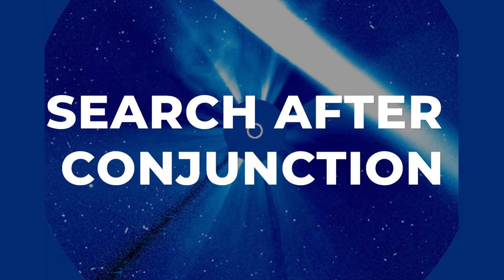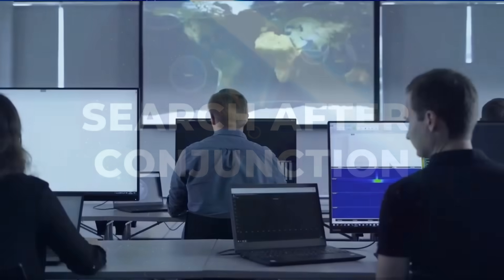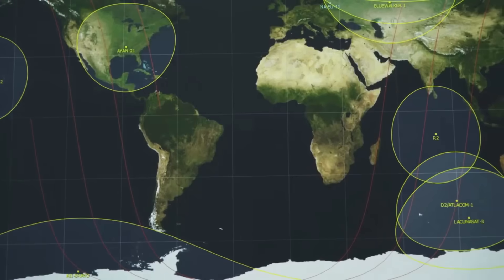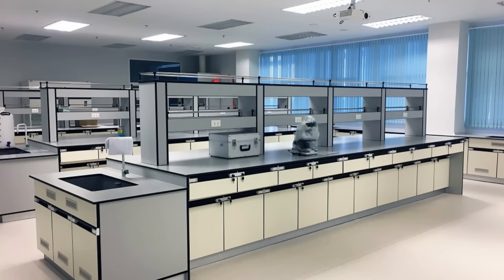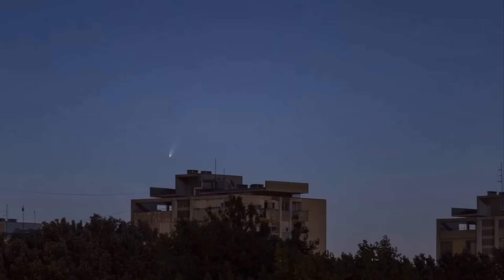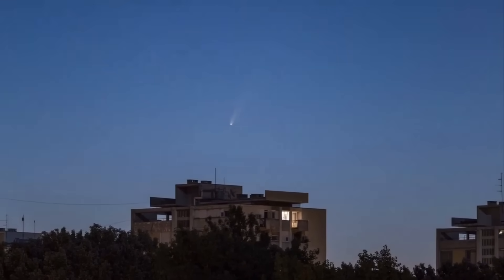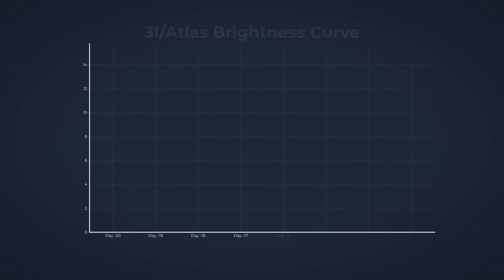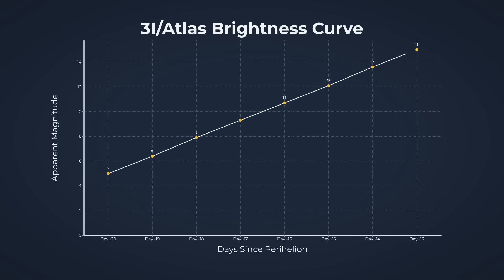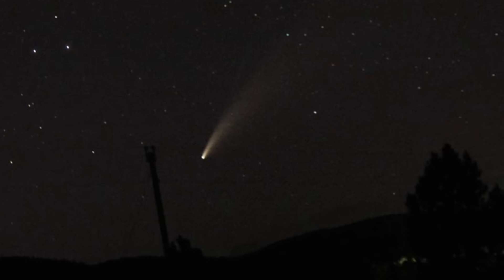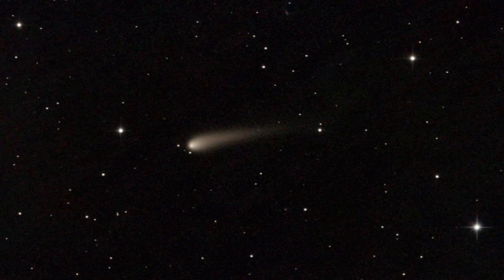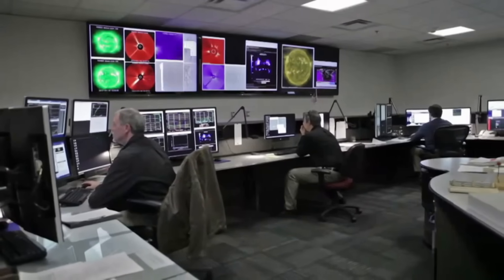Four distinct outcomes wait on the far side of the Sun, each with a signature that reveals itself in the data before the comet itself comes into view. The first is the simplest: 3I-Atlas survives perihelion intact. In this case, the comet reappears with a brightness curve that matches pre-conjunction predictions, steady, perhaps faint, but unmistakably on track. Its coma remains compact, and no sudden changes ripple through its light. This is the outcome most comet scientists expect, but it's also the least dramatic.